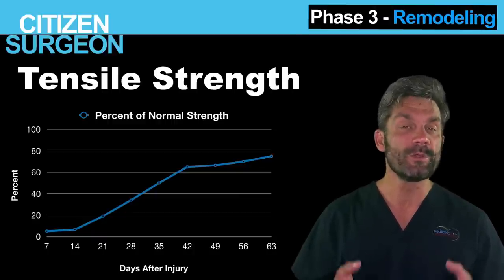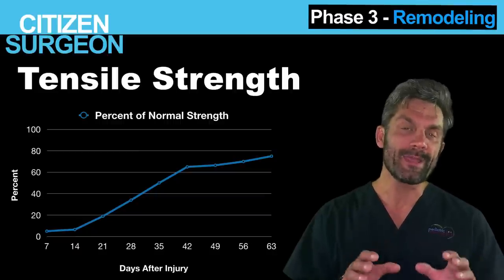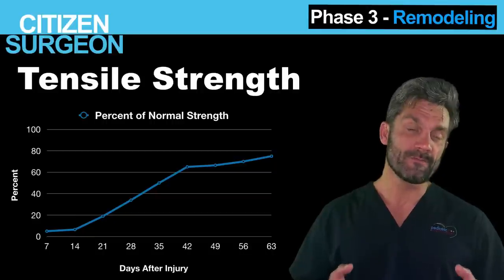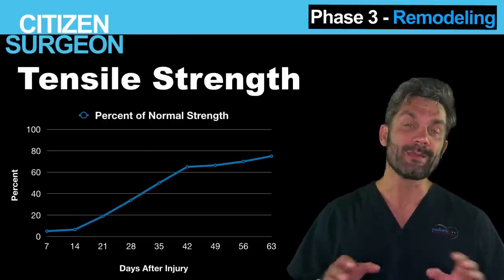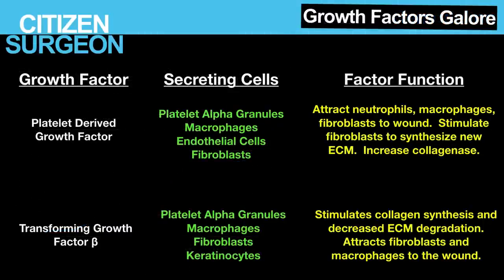In the next couple of slides I want to go over really important growth factors. We'll break them down by what the growth factor is, what cells secrete it, and what its function is. First: platelet-derived growth factor, or PDGF, is secreted by alpha granules in platelets, and also macrophages, endothelial cells, and fibroblasts. PDGF is a chemoattractant — it attracts neutrophils, macrophages, and fibroblasts to the wound. It also stimulates fibroblasts to synthesize new extracellular matrix, and it increases collagenase enzyme activity, which is active in the remodeling process.